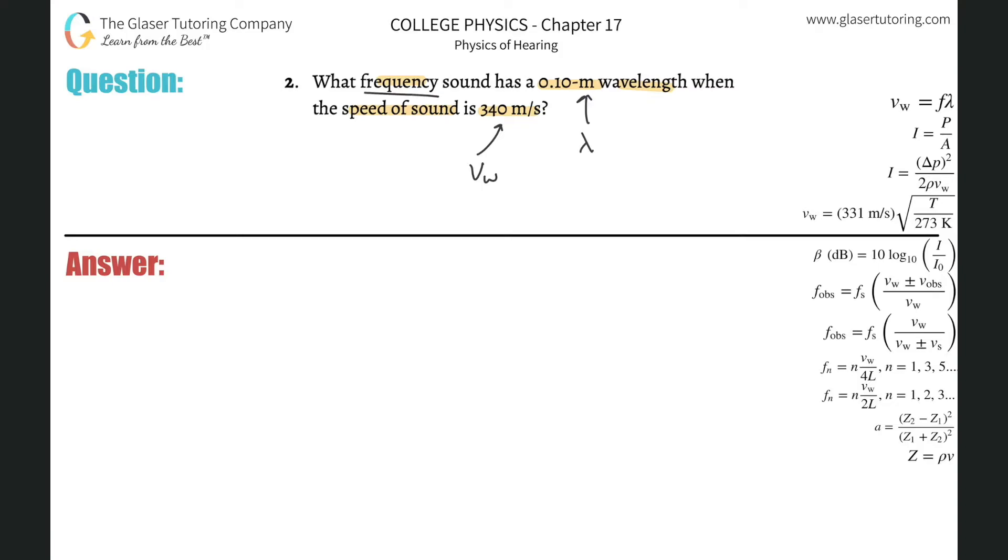So in order to find the frequency, I need to know the relationship between velocity of a wave, wavelength, and frequency. We have a nice little formula up there in the upper right. It says that the velocity of a wave will equal the frequency of that wave multiplied by its wavelength.